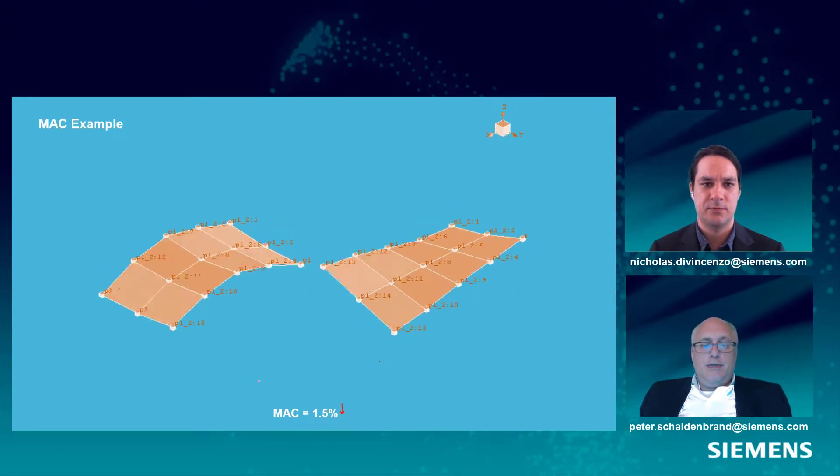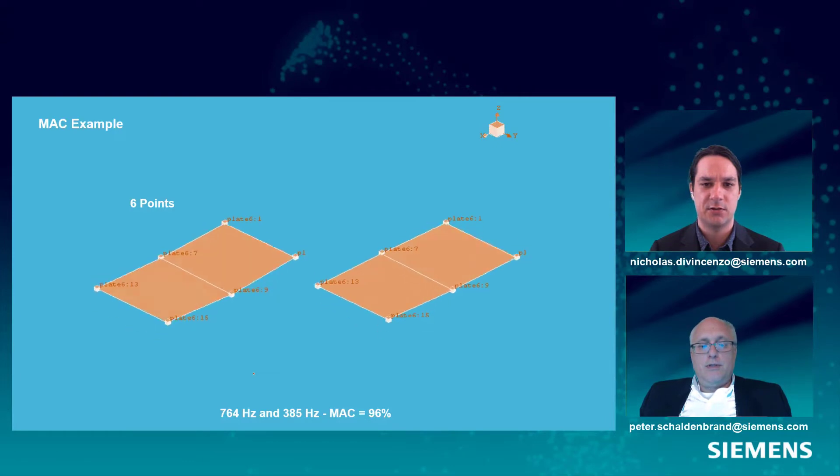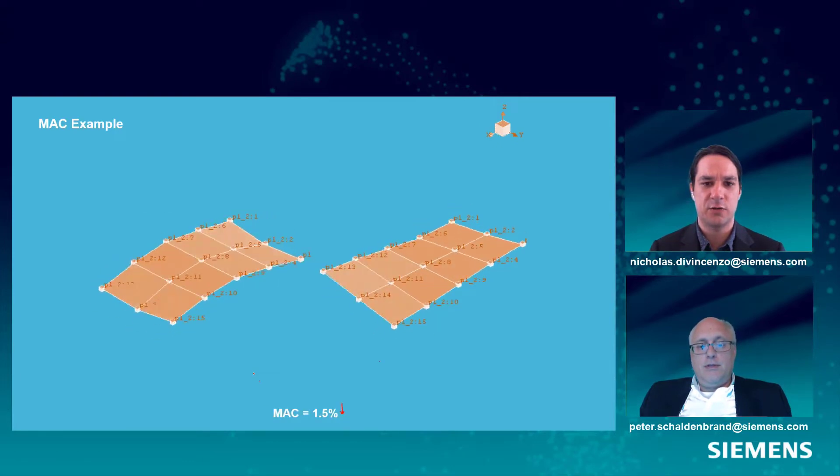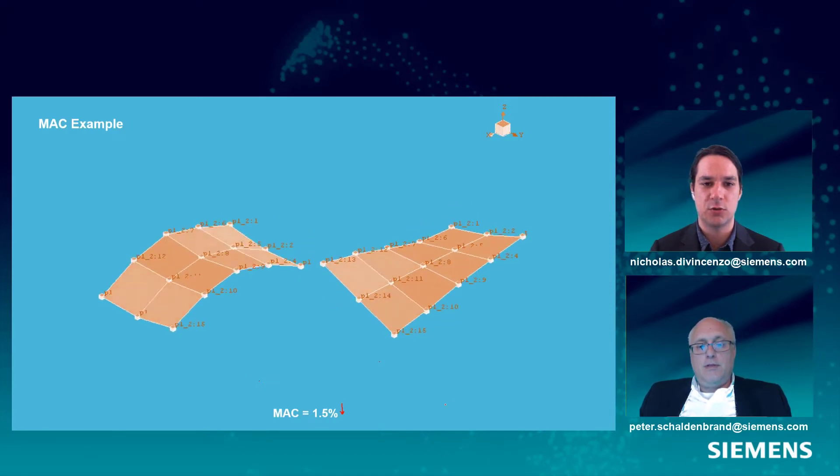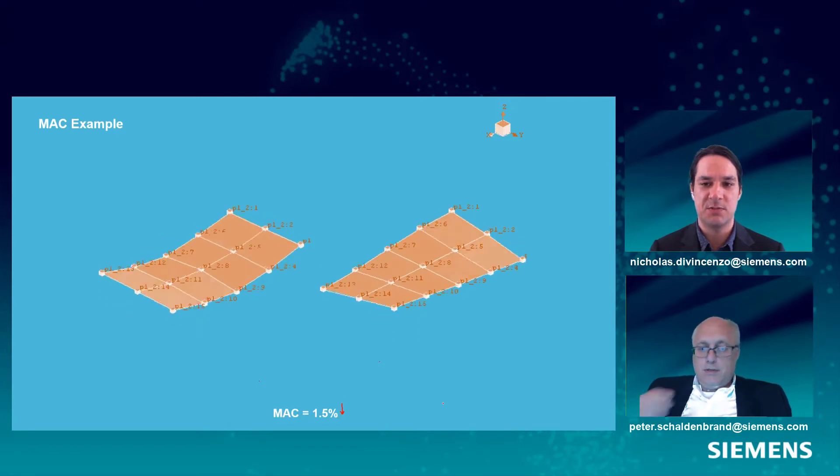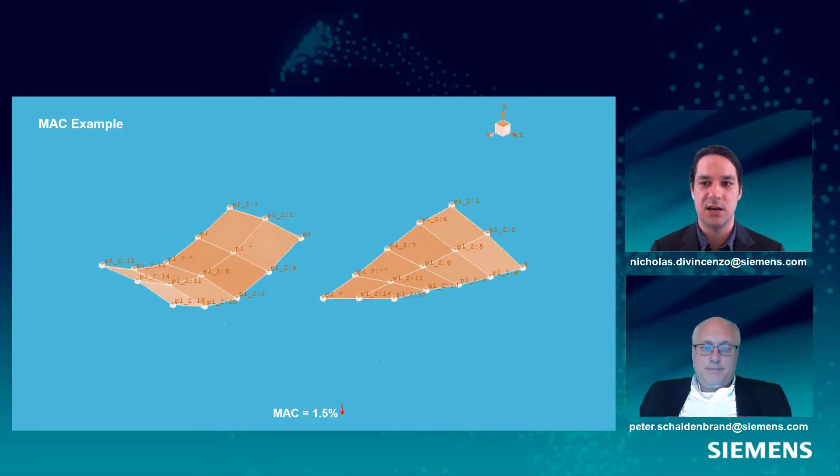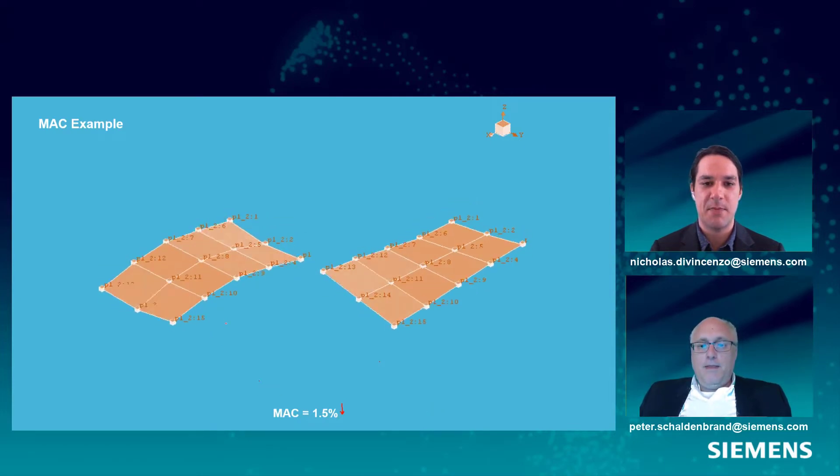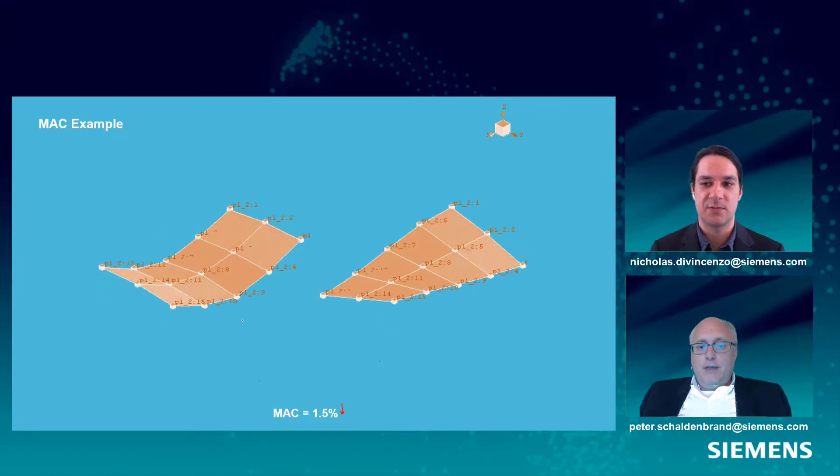All right. That sounds good. And that's a good MAC value, Pete, right, for two different mode shapes if we go back to that last slide. That's a good MAC value for two different mode shapes. You know, we might have mode one on the right and mode two on the left. And we expect our mode shapes to be special snowflakes. Each one is completely unique. So we expect that MAC value to be, in this case, very low.